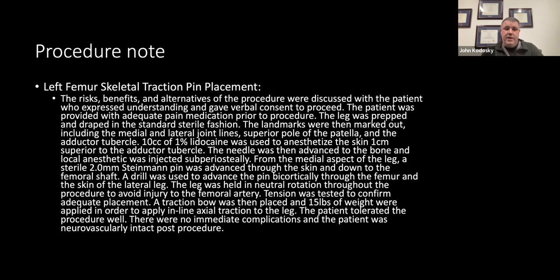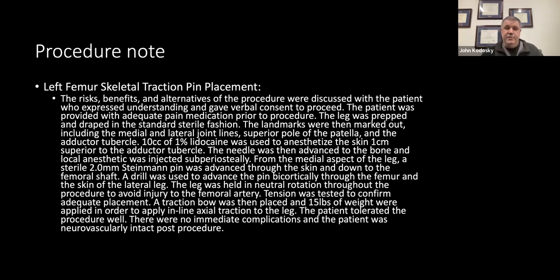The landmarks were then marked out, including the medial and lateral joint line, superior pole of the patella, and adductor tubercle. 10 cc's of lidocaine was used to anesthetize the skin from one centimeter superior to the adductor tubercle, then the needle was advanced to the bone and local anesthetic was injected subperiosteally. A sterile two millimeter Steinmann pin was advanced from the medial aspect down to the femoral shaft, drilled bicortically through the femur, with the leg in neutral rotation throughout to avoid injury to the femoral artery. A traction bow was placed and 15 pounds of weight were applied for inline axial traction. Patient tolerated the procedure well with no immediate complications and was neurovascularly intact post-procedure.